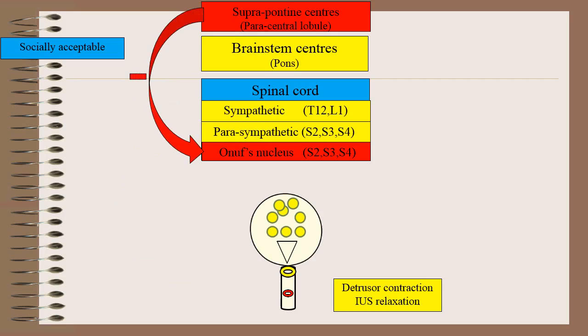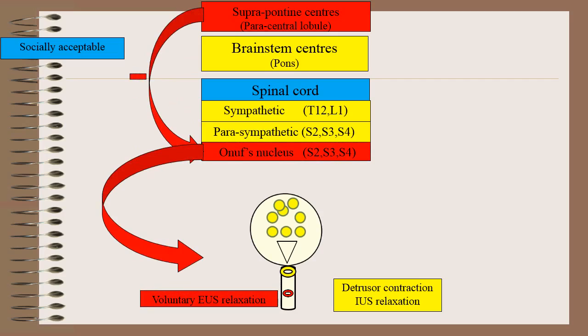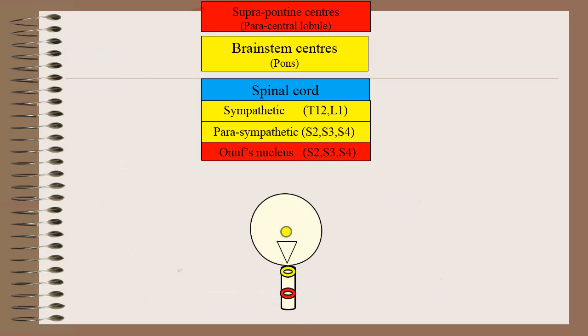At the same time, the suprapontine center gives inhibitory impulses to Onuf's nucleus, and Onuf's nucleus in turn through the pudendal nerve causes voluntary external urethral sphincter relaxation. Thus, the process of voiding occurs.